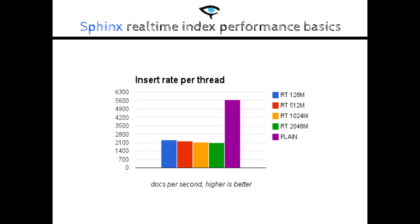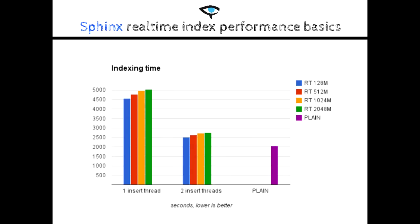In short, the inserting rate will decrease slowly as RT mem limit gets bigger. But real-time indexes do have an advantage over plain indexes. Plain indexes use a single-threaded operation, meaning we can't speed it up unless we split it. With RT indexes, nothing stops us from using more than one insert script. In this example, we used two scripts, each inserting one half of the data. While the speed of each thread dropped a bit, the total time needed to insert all data was only 30% to 35% bigger than the plain index, and almost half the time compared to using only one insert script.